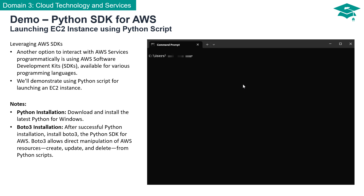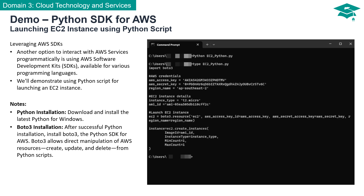We've developed a straightforward Python script named EC2_Python. All that's required is to run the script. The Python script for creating and launching an EC2 instance requires the latest version of Python installed on your system, downloadable from the official Python website. Once Python is installed, incorporate Boto3 — the Python SDK for AWS. Boto3 serves as the bridge between your Python scripts and AWS services, allowing direct manipulation of AWS resources including creation, updating, and deletion.